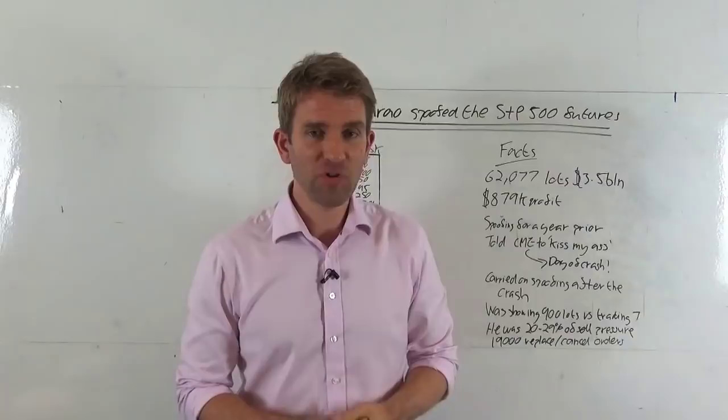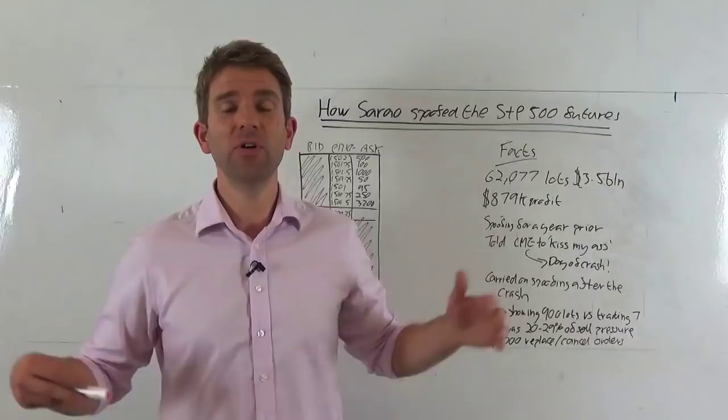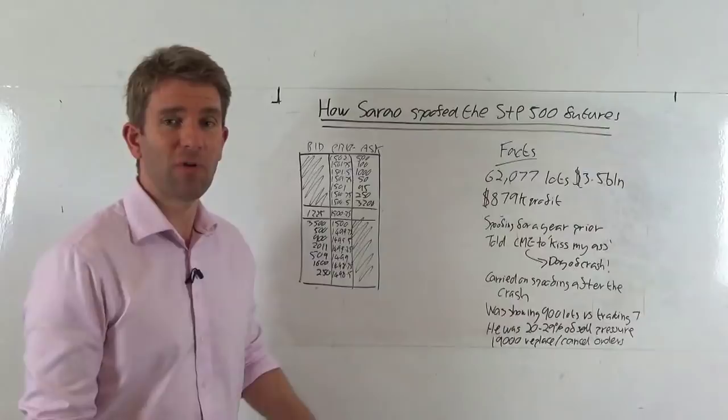So the flash crash - we know that Sarao, who was trading from his bedroom in his parents' house in Hounslow, West London, was arrested and charged with causing the flash crash, or at least he was charged with spoofing the market. Let's have a look at exactly what he was doing and look at some facts around the whole case.